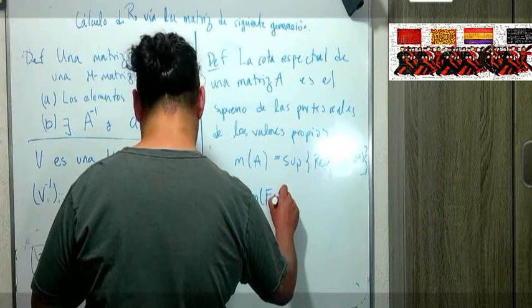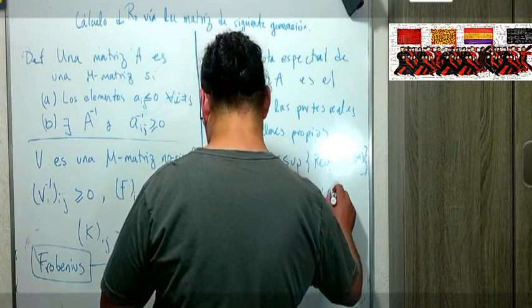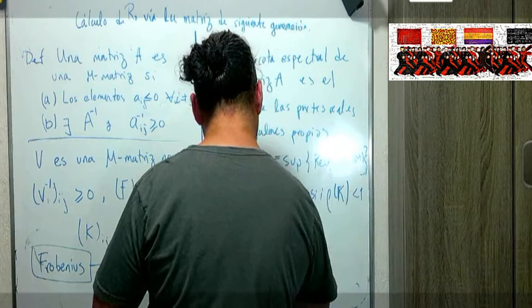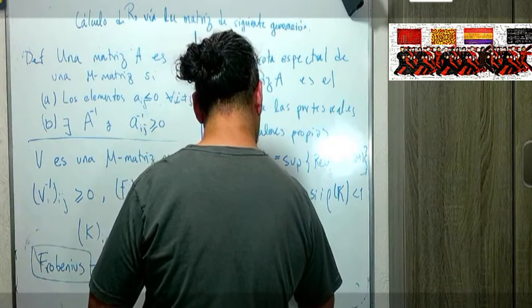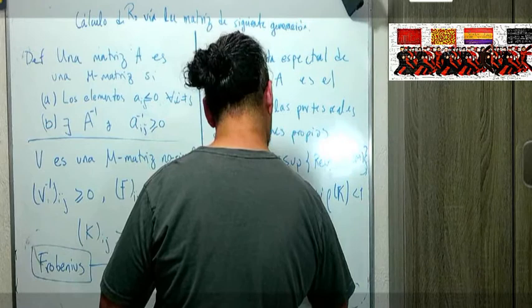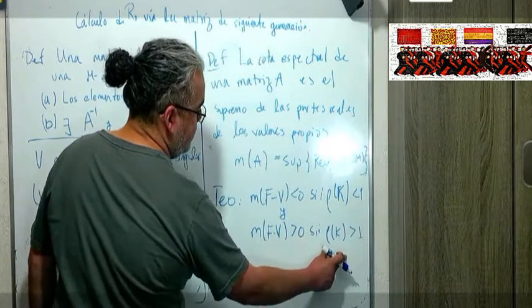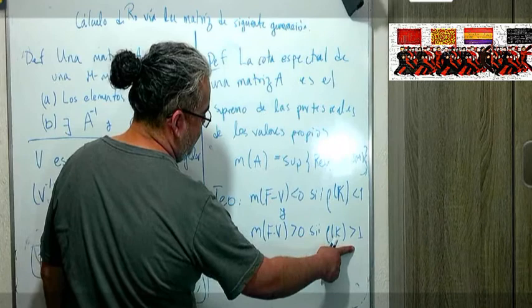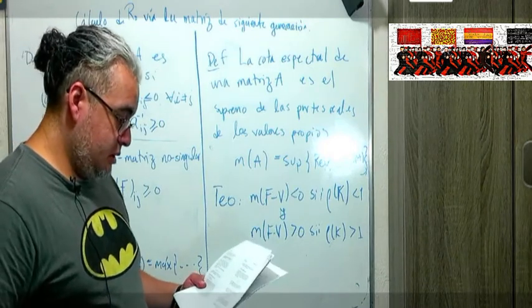Y el resultado del que nos vamos a agarrar es que la cota espectral de F - V es menor que cero si y solo si el radio espectral de la K es menor que 1, y esto es mayor que cero la cota espectral es mayor que cero si solo si el radio de K, el radio espectral de K es mayor que 1. Acuérdense que esta cosa es el R0 y lo que nos está diciendo es que va a haber un brote epidémico si el radio espectral es mayor que 1, el radio espectral de la K es mayor que 1. Entonces vamos a ver un par de ejemplos.